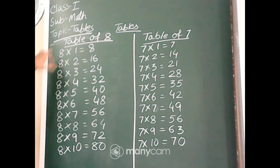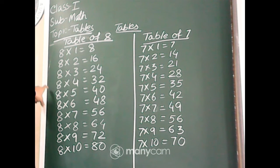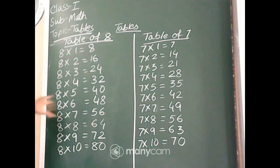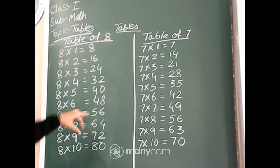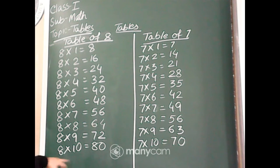8 ones is 8. 8 twos are 16. 8 threes are 24. 8 fours are 32. 8 fives are 40. 8 sixes are 48. 8 sevens are 56. 8 eights are 64. 8 nines are 72. 8 tens are 80.